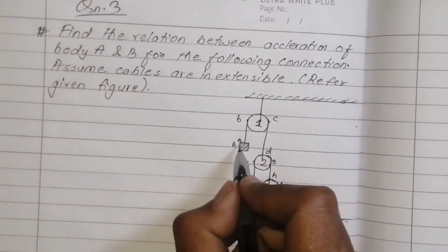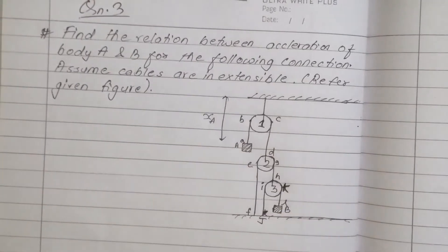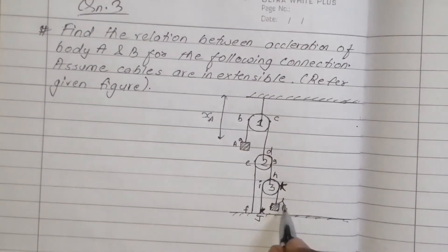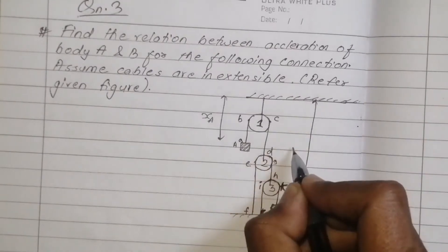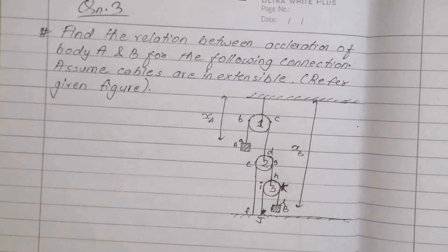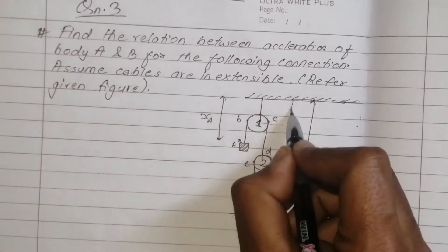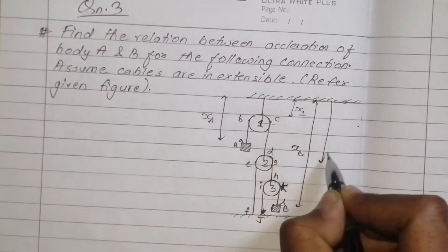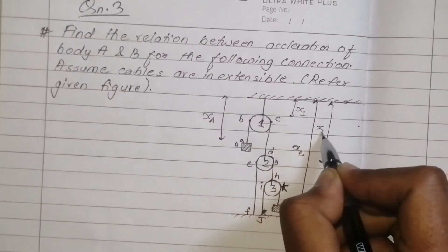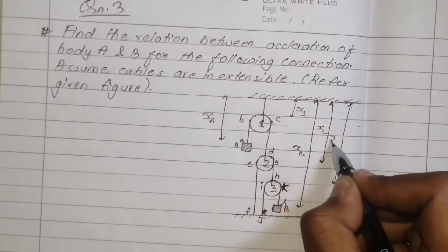This is the distance of x. Then b is the distance of x. This is the distance of x. Now, 1 is the distance of x. This is a distance of x.